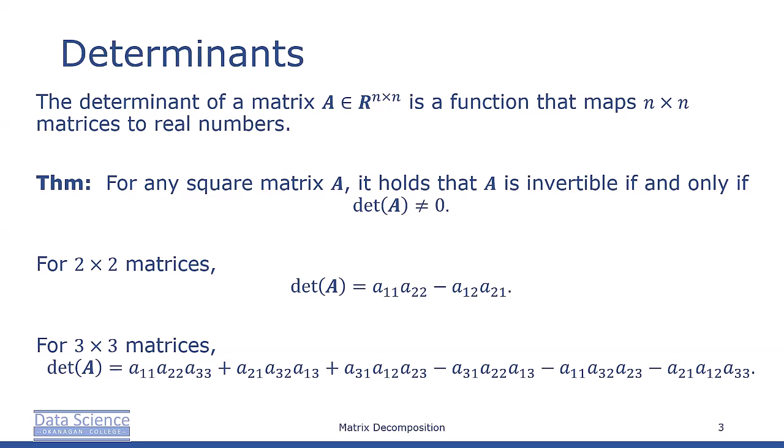For certain types of matrices, we have explicit closed-form expressions for the determinants. For example, for 2×2 matrices, det(A) = a₁₁a₂₂ - a₁₂a₂₁.